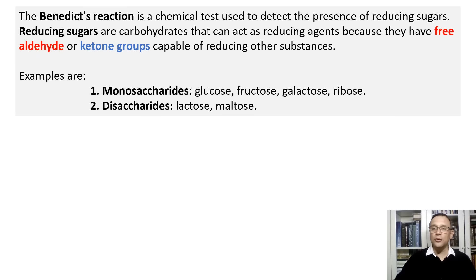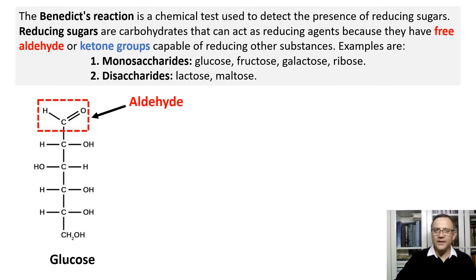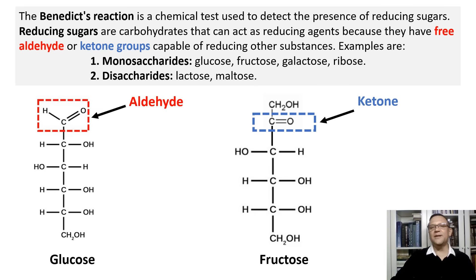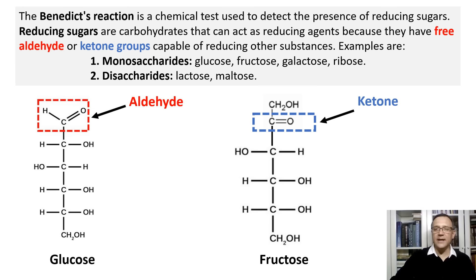Note that sucrose, commonly known as table sugar, is not a reducing sugar, therefore it is not included in this list. Here is the structural formula of glucose — it has an aldehyde group in its open chain form. And here is fructose, which has a ketone group in its open chain form. Both of these simple sugars are reducing sugars because glucose has an aldehyde group and fructose has a ketone group.